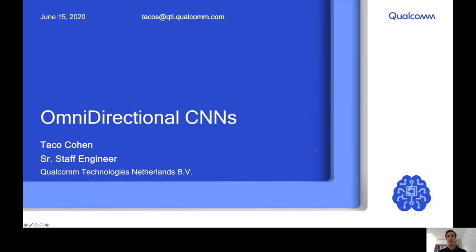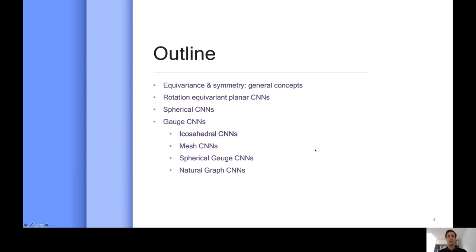The outline for today is as follows. First I'll talk about the general concepts of equivariance and symmetry which are fundamental to this work. I'll talk about rotation equivariant CNNs on the plane which will help understand the generalization to spherical images. Then I'll talk about spherical CNNs, convolutional networks that operate directly on spherical images or other kinds of signals on the sphere. Finally I'll talk about gauge CNNs which is a class of methods and mathematical theory for how to build convolutional networks on general manifolds. The icosahedron is probably the most interesting for omnidirectional vision because it leads to a very efficient algorithm. We also have mesh CNNs which can be applied to arbitrary meshes in three dimensions, and recent work on the spherical gauge CNN, the faster spherical CNN, as well as natural graph CNNs.